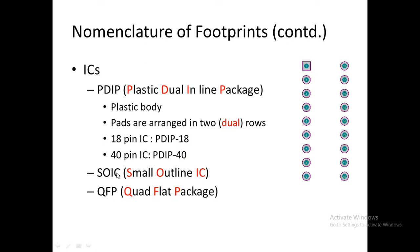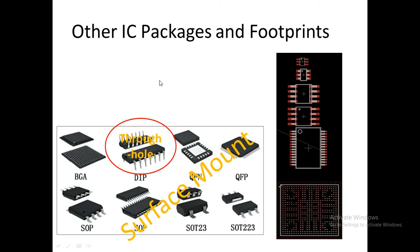Now, these are two SMD packages. SOIC means small outline IC, and QFP means quad flat package. The shapes of these packages will be shown in the next slide. These are some other IC packages and footprints: this is the DIP package — the only through-hole package — and the rest of the packages other than DIP are all surface mount. These include SOP, SOT-23, QFN, QFP, and BGA — ball grid array. These are the shapes of different packages and these are their footprints. This is BGA, this is SOT, and this is SOT-23.